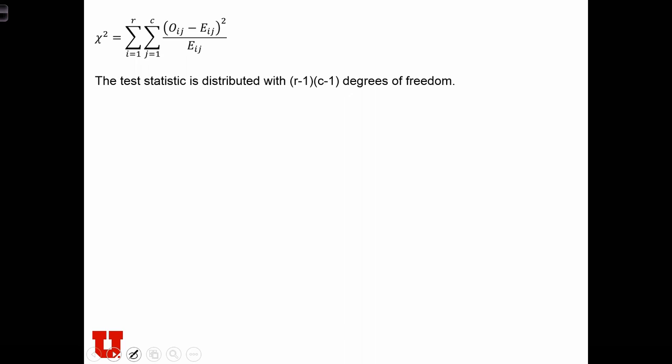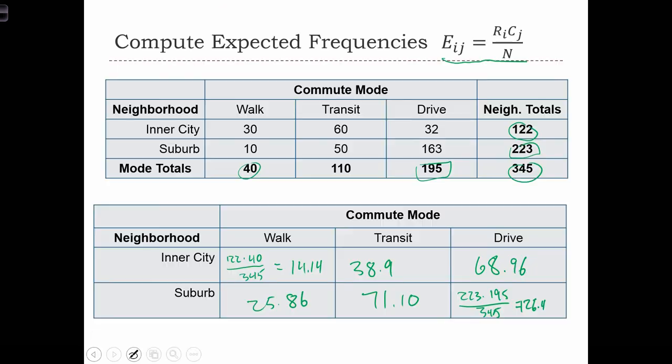And now we need to calculate the chi-squared statistic. So we're going to have the first cell. Basically, what we're going to do is take the difference between this value and this value. That's Oij minus Eij, square it and divide it by Eij.